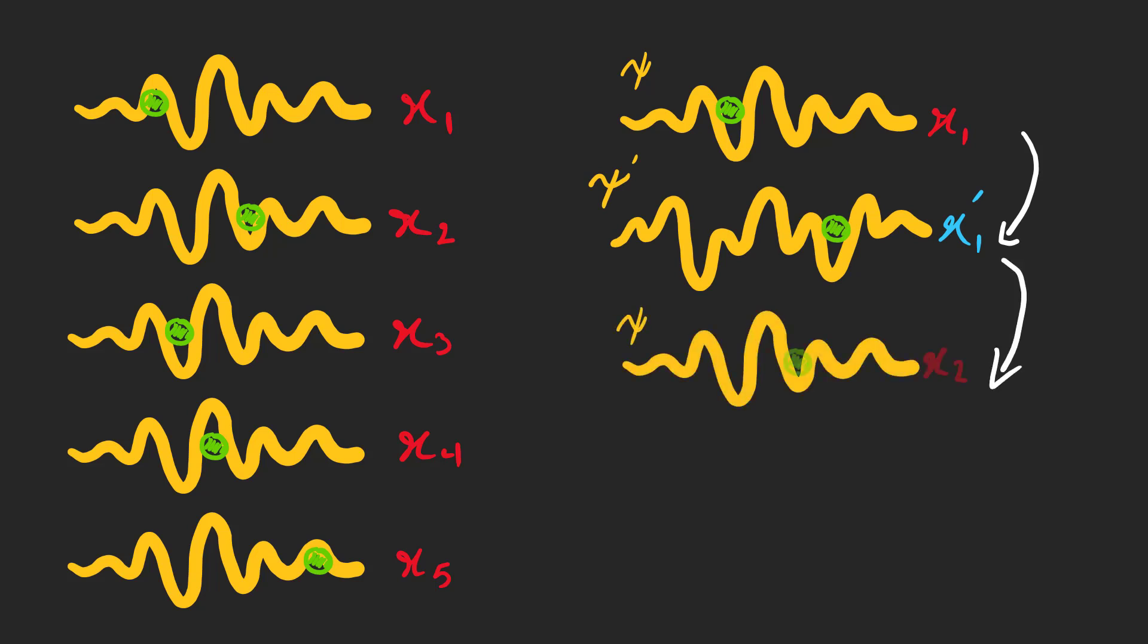However, if we return the particle to its original state psi, and then perform a measurement, it yields x2, which is still a measurement performed on psi. By repeating this process, we can again have position values obtained from state psi.